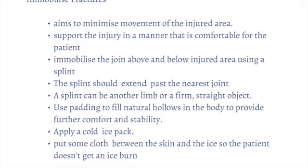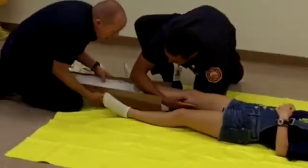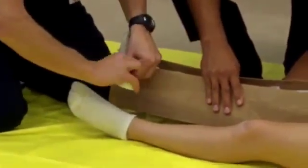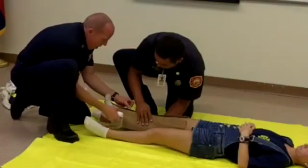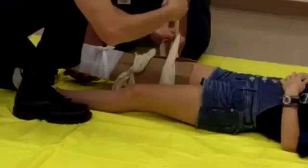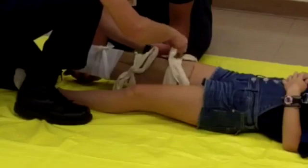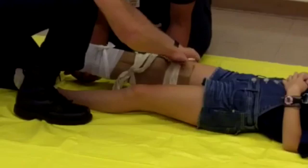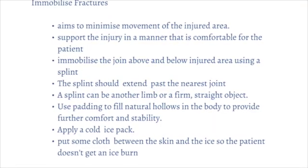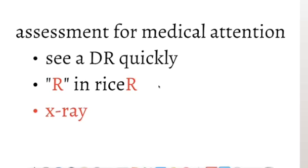Step four is immobilizing the fracture. The aim is to restrict movement of the fracture or dislocation. Support the injury in a position that is comfortable for the patient — don't try to straighten it if they have it bent. Immobilize the joint above and below the injured area using a splint, which can be another limb or a firm straight object. Use padding to fill natural hollows for comfort and stability. Apply a cold ice pack as per the RICER principle, with cloth between the skin and the ice to prevent ice burn.